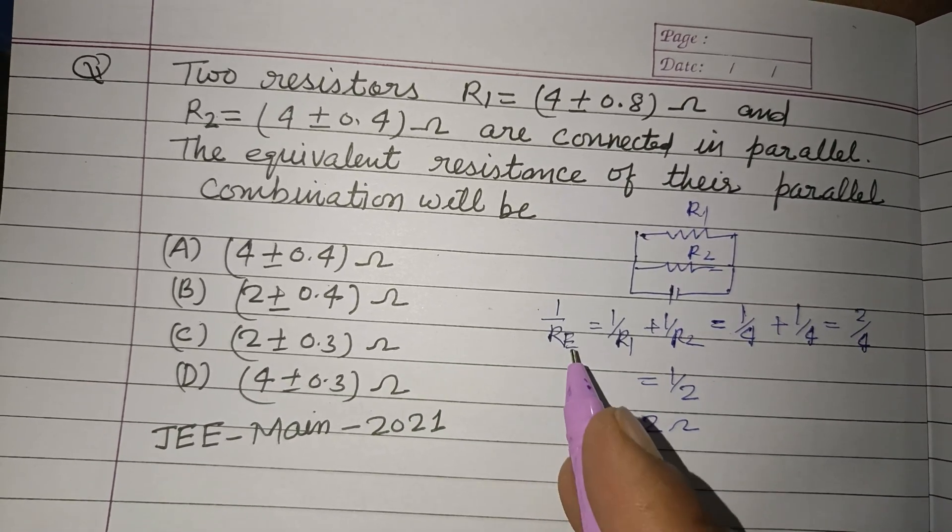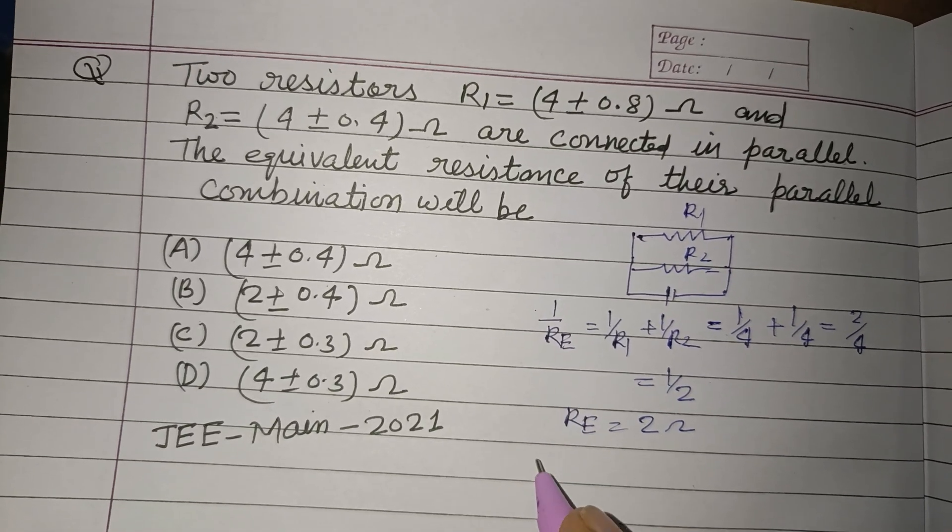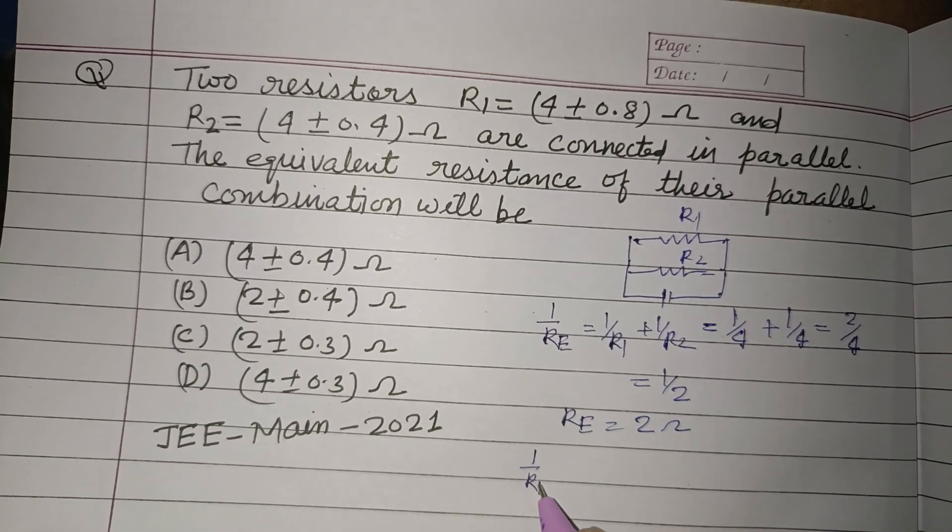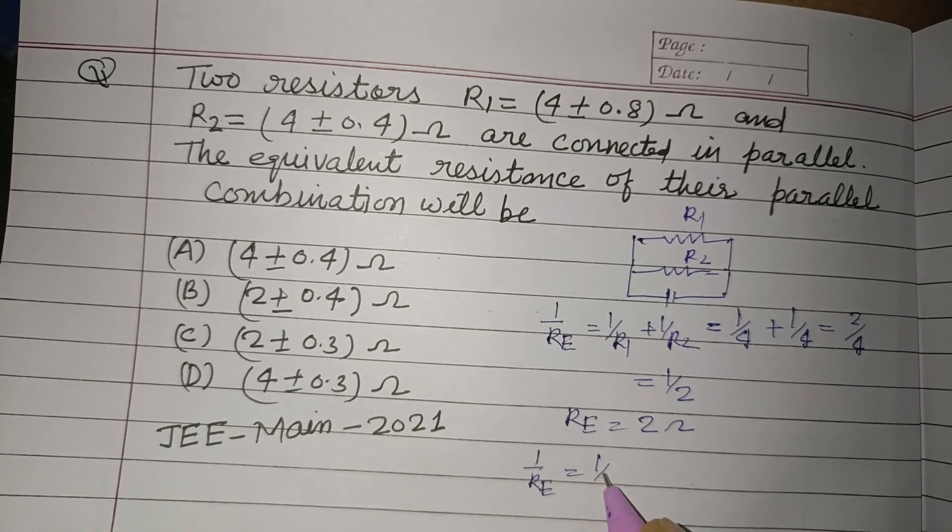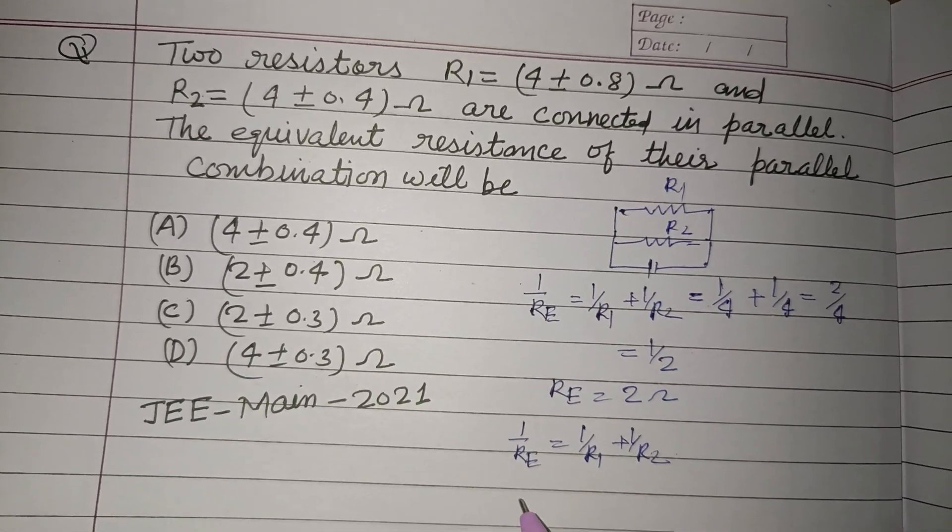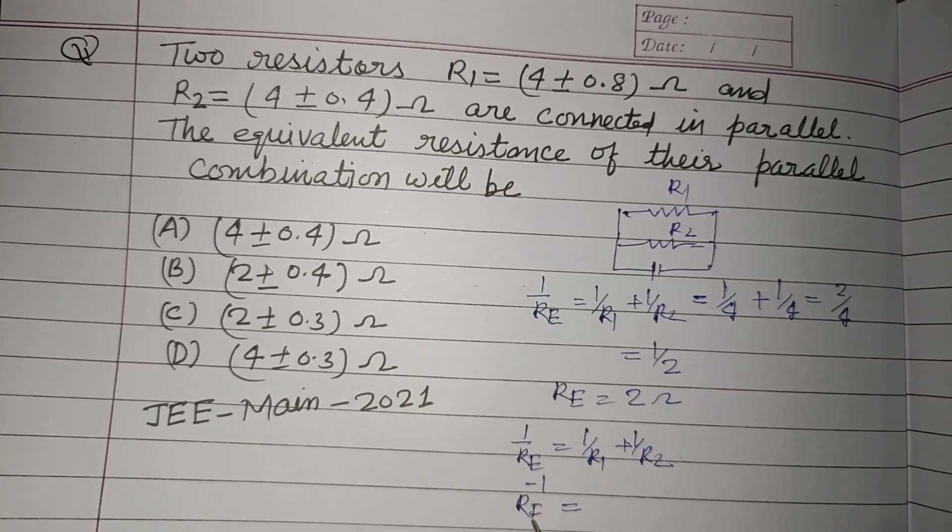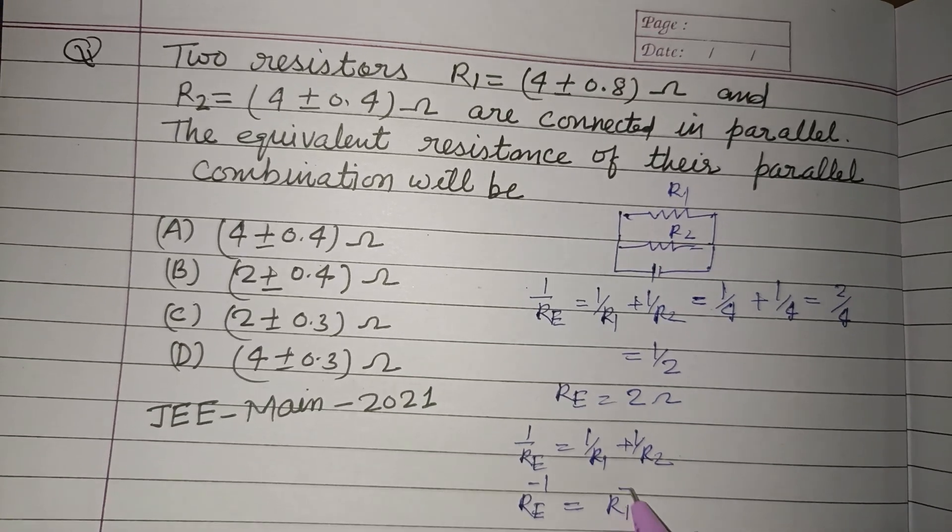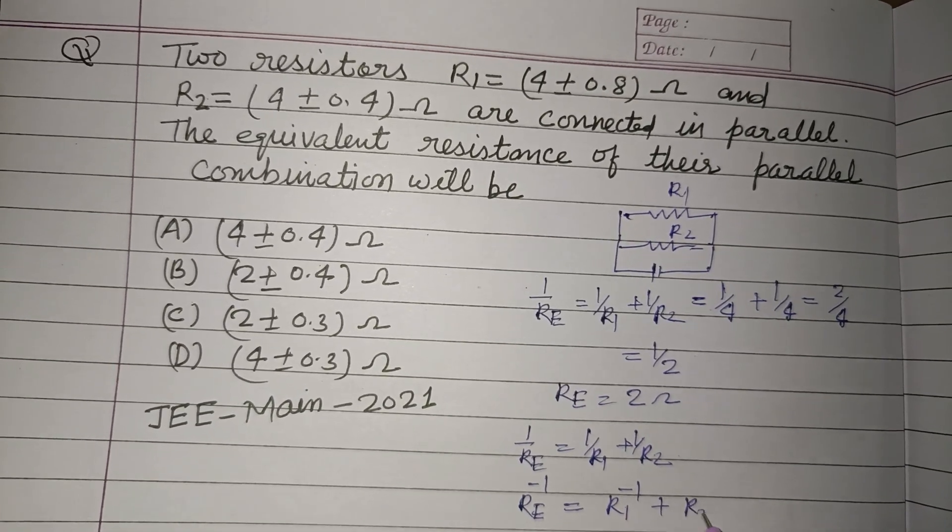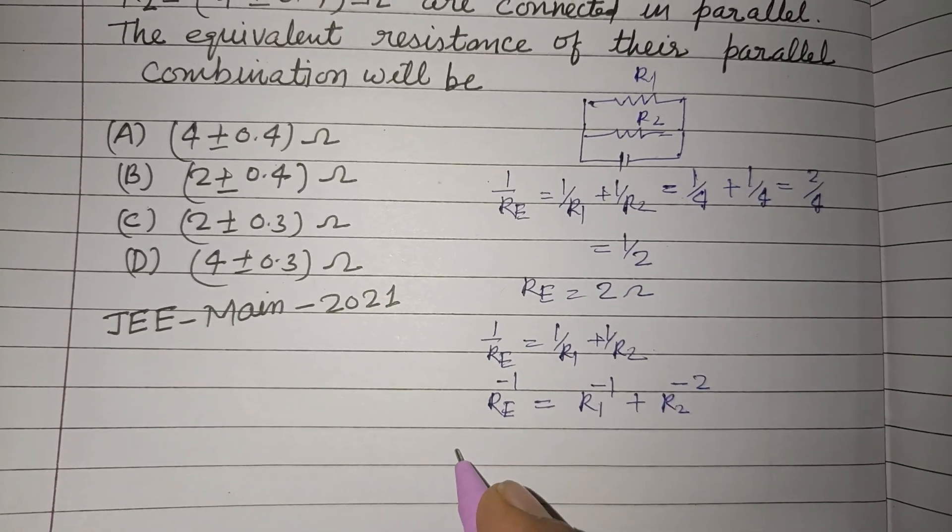Now when they have percentage error, differentiating this 1 upon RE equal to 1 upon R1 plus 1 upon R2, we can write it as RE to the power minus 1, R1 to the power minus 1, R2 to the power minus 1. Now differentiating this.